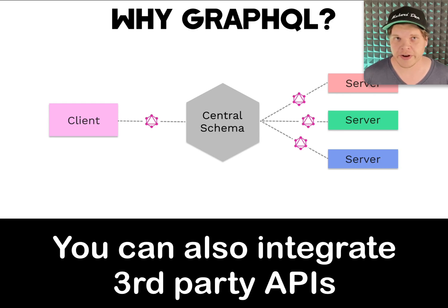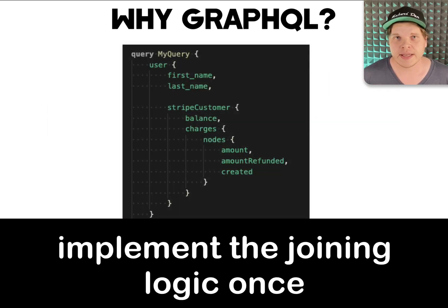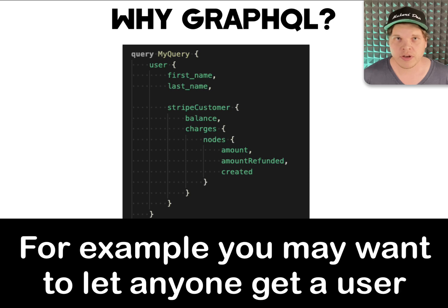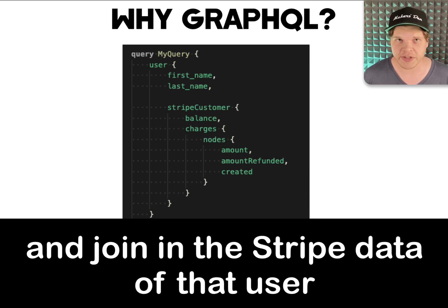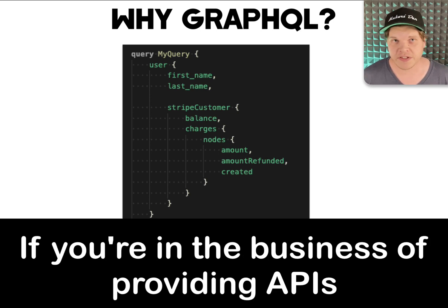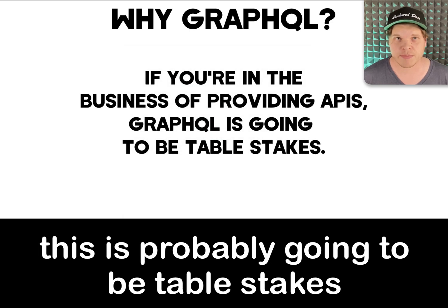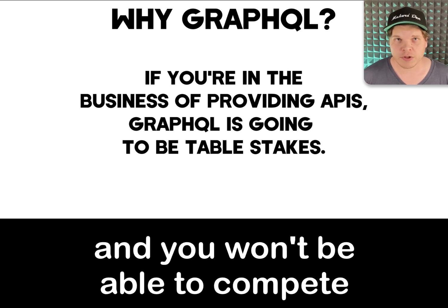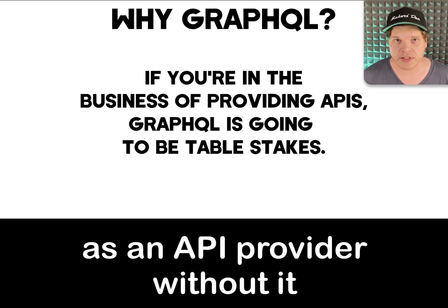You can also integrate third-party APIs — implement the joining logic once in your GraphQL API and let anyone in your company leverage the work. For example, you may want to let anyone get a user and join in the Stripe data of that user, without them having to integrate into Stripe separately. If you're in the business of providing APIs, this is probably going to be table stakes going forward — developers will expect GraphQL, and you basically won't be able to compete as an API provider without it.